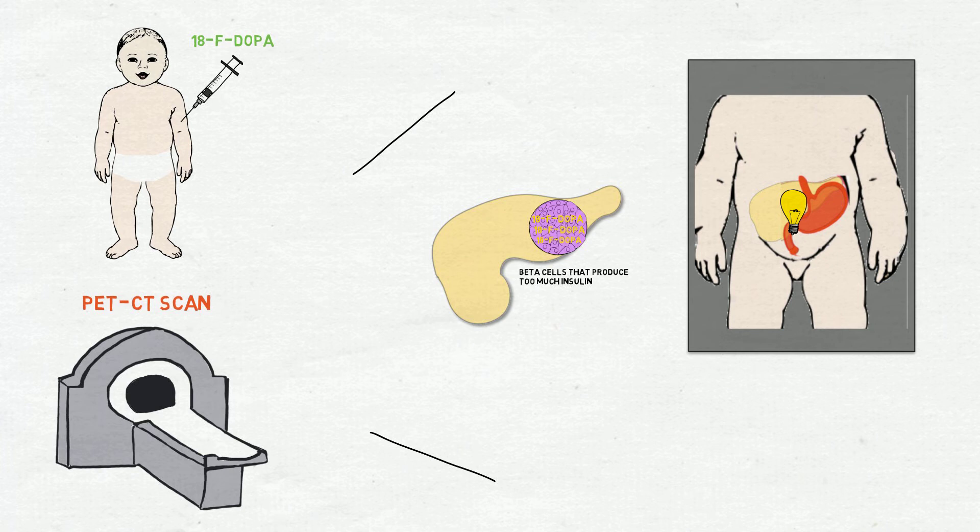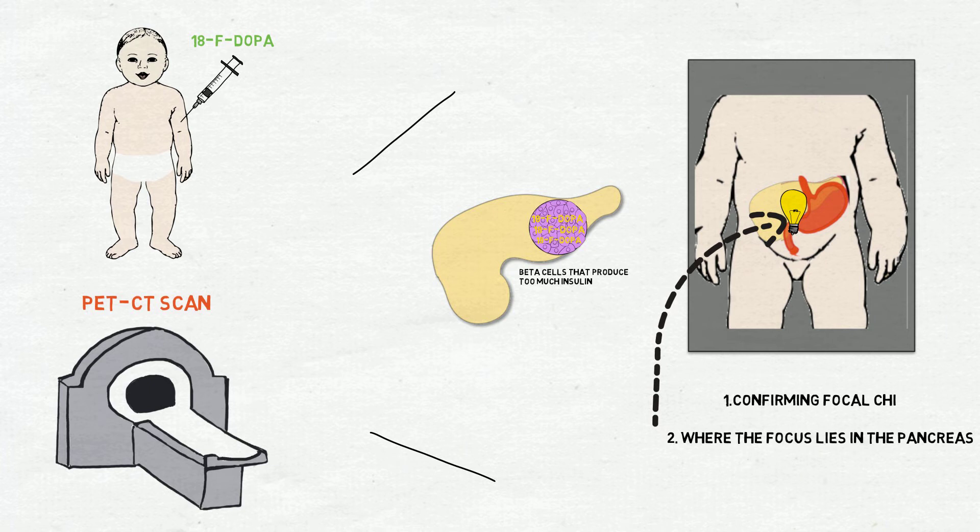In addition to confirming focal CHI, the scan can tell us where the focus lies in the pancreas and if it is near to important structures.